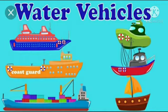Now we are going to learn about water transport. Water transport vehicles include rafts, boats, ships, and so on. Ships carry people and goods across the ocean to different countries. Boats and rafts are smaller than ships. They can be used to travel shorter distances through water.